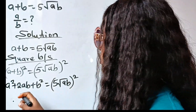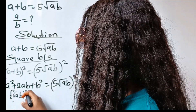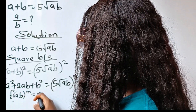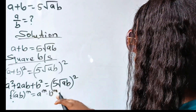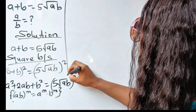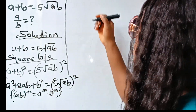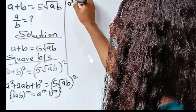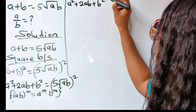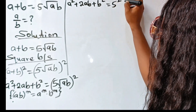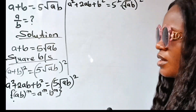Now, recall that A multiplied by B, raised to the power of M, is equal to A to the power of M multiplied by B to the power of M. So that means A squared plus 2AB plus B squared is equal to 5 squared multiplied by root AB squared.